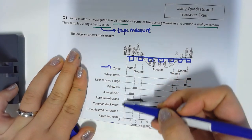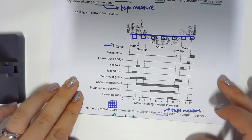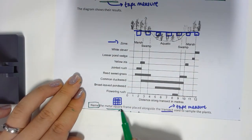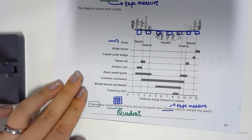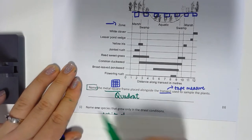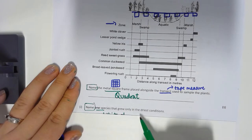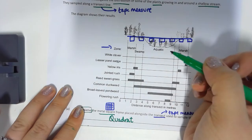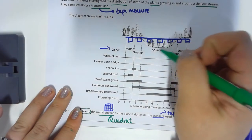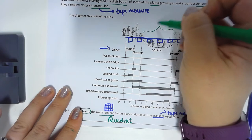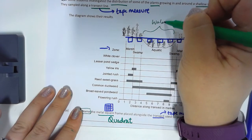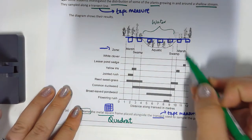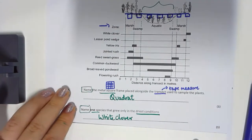Firstly, I'm going to box the command word: name the metal square placed along the transect — it's called a quadrat. Name one species that grew only in the driest conditions. The driest conditions are outside the water. Between certain points we have water, and on either side we don't. The ones growing in the driest conditions are those at the end, which is white clover.